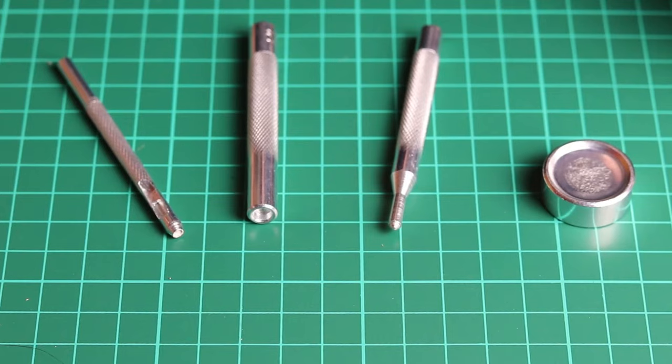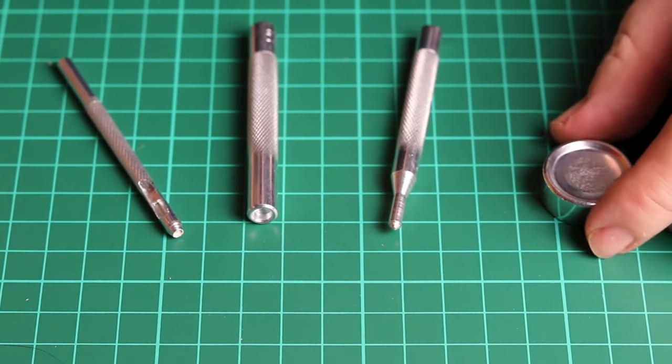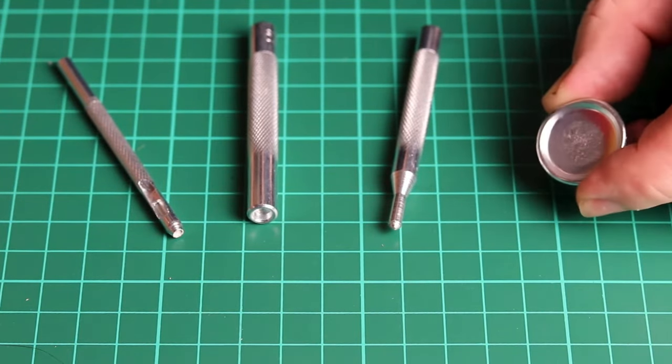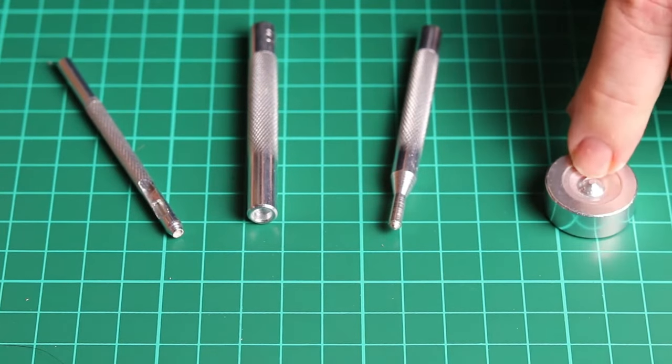So what do you get in the box? Firstly, we have a 24mm round forming die. This is a concave side, and it also has a pin side.